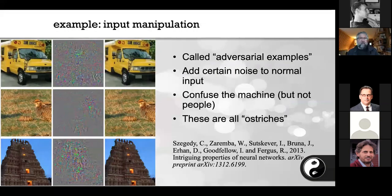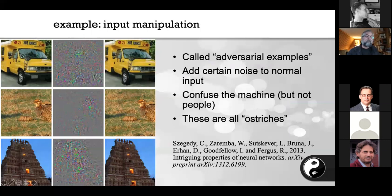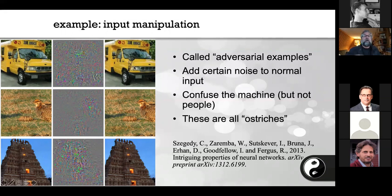Here's an example of input manipulation — adversarial examples. If you train a network to recognize school buses and then overlay the image with crazy-looking noise, you get a picture that a human would still call a school bus. The one on the right is the school bus with the mask over it. But if you show that masked school bus to the machine learning algorithm trained to recognize school buses, it says it's an ostrich. Everything is an ostrich. The mask causes the ML program to misclassify in a way a human never would.